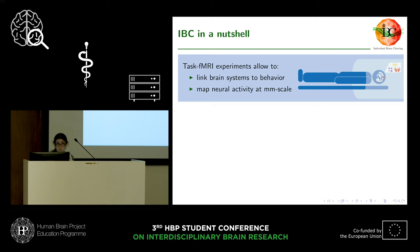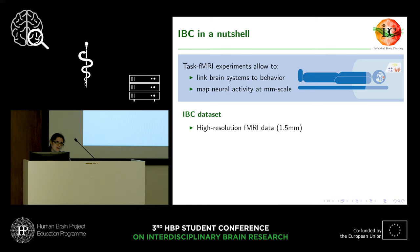Usually at best, what we can do is link brain systems to behavior. Besides that, we are also only able to map neural activity at the millimetric scale — usually three millimeters of resolution in fMRI. The IDC dataset tries to address these problems: because we do multiband imaging, we can increase the resolution and go to 1.5 millimeters.